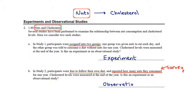We probably have some intuitive sense for which of these is a stronger study for establishing a cause-and-effect relationship. If people are free to follow their own diet and only report their nut consumption, it doesn't feel as strong as if researchers told people whether to eat nuts or not. That intuition will be helpful as we consider what we can conclude from each type of study.